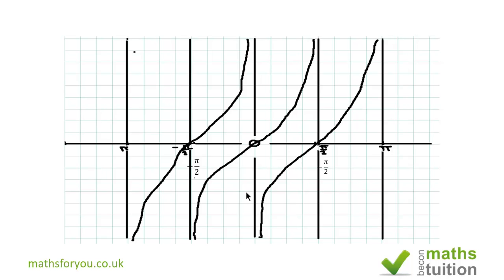This is the normal graph for tan x. We can see that for one of the sections, x is greater than -π/2 and is less than π/2. And we can see the asymptotes at -π/2 and π/2.